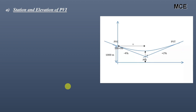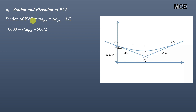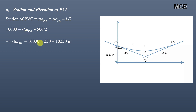First we will find the station and elevation of PVI. The station of PVC equals the station of PVI minus half the length of the curve. Since the station of PVC is 10,000 meters and the length of curve is 500 meters, the station of PVI equals 10,000 plus 250, which is 10,250 meters, or expressed in stations: 102+50.